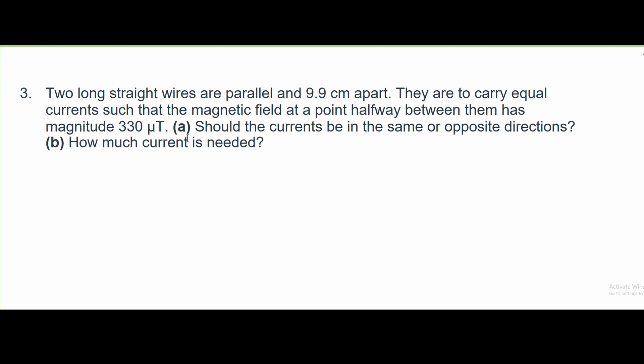For number three, we have two long straight wires that are parallel and 9.9 centimeters apart. They are to carry equal currents such that the magnetic field at a point halfway between them has magnitude 330 micro teslas.